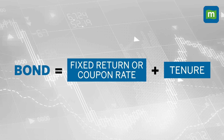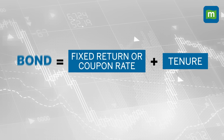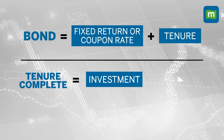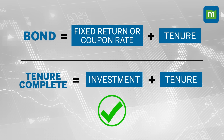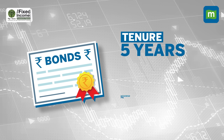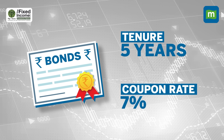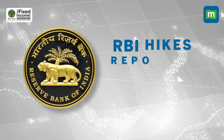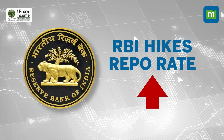Let me explain in simpler terms. As we know, bonds come with a fixed return or coupon rate and also a tenor of a few years. Investors need to hold the bond for that fixed period, after which the issuing company returns the original investment along with any accumulated interest. Say you invest in a bond that is paying a coupon of 7% a year and has a tenor of five years. A year after you buy this bond, the RBI hikes its repo rate.